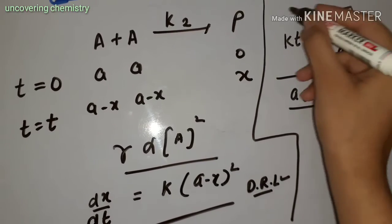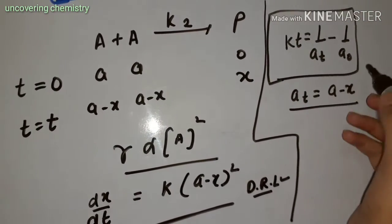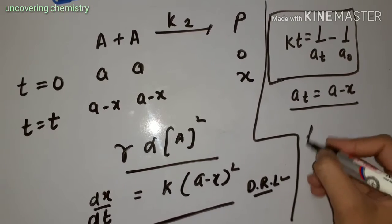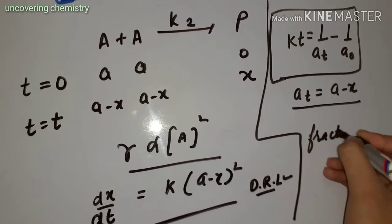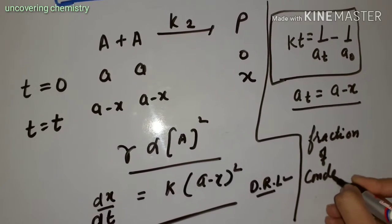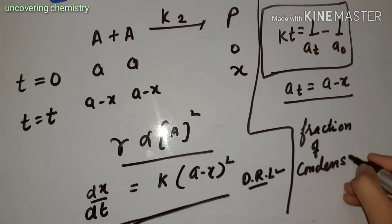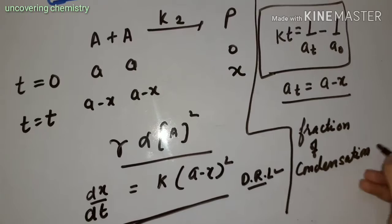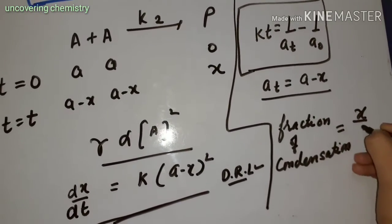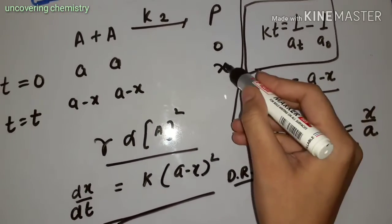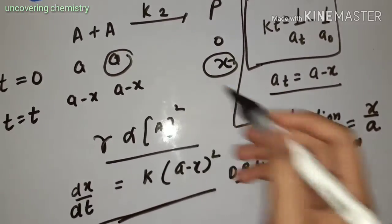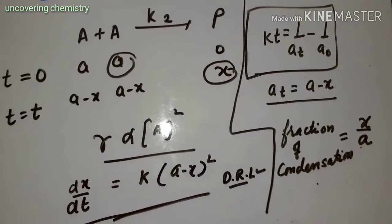This is the equation for the second order reaction. One term used here is fraction of concentration, which means X divided by A — that is, X divided by the initial concentration. This is the fraction of concentration.